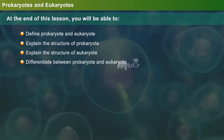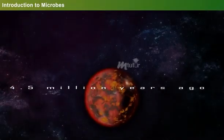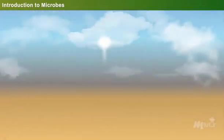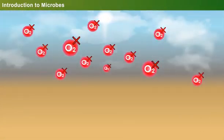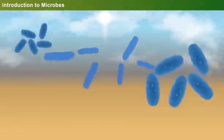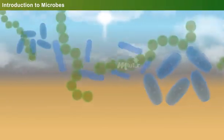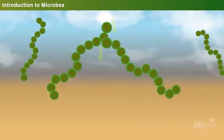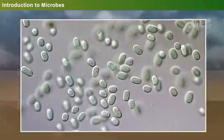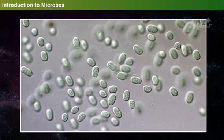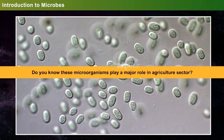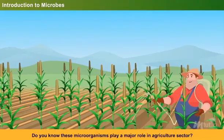About 4.5 billion years ago, the earth was a barren land without any life on it, since it was devoid of oxygen. Later, life originated in the form of anaerobic bacteria. After which, photosynthetic bacteria evolved and consumed the sun's energy to produce oxygen. Since then, several minute microorganisms emerged and were present everywhere on the planet. Do you know these microorganisms play a major role in the agriculture sector?